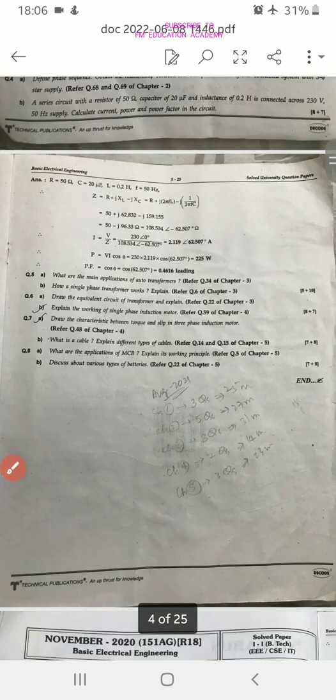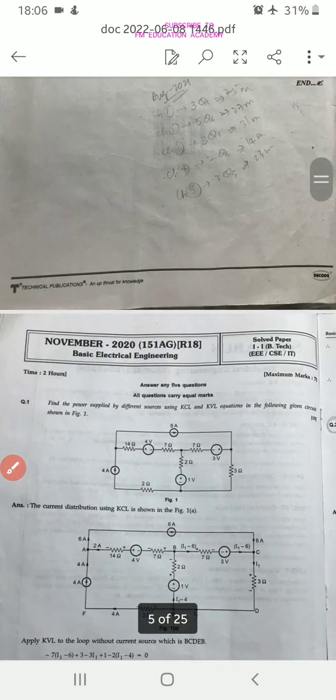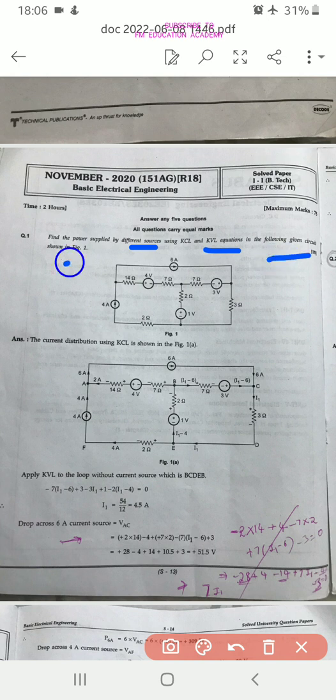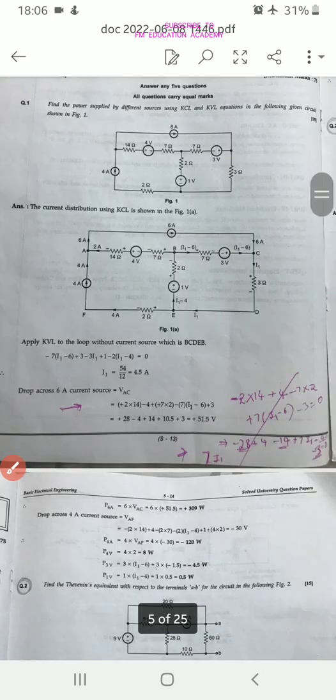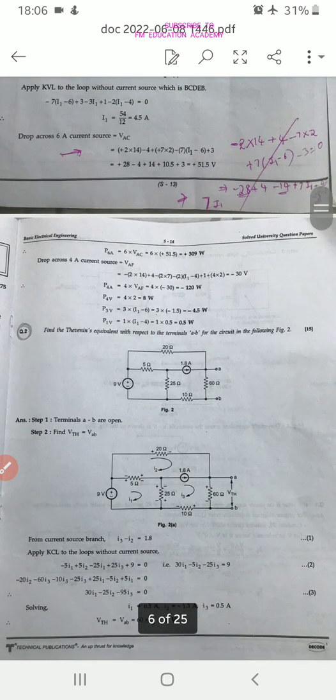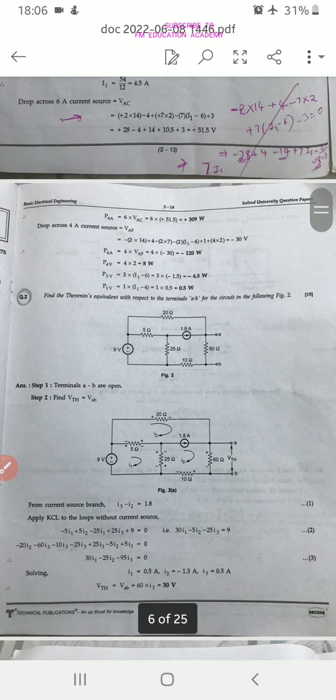Now, let us see the question paper of November 2020. The first question is, find the power supplied by different sources using KCL and KVL equations in the following given circuit shown in the figure. Just go through the sums. Find the Thevenin's equivalent with respect to terminals AB for the circuit. Problem based on Thevenin's theorem.